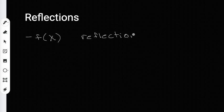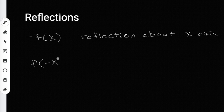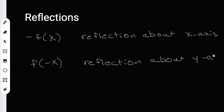Reflections happen when you multiply by a negative number. If you have a negative on the outside — negative f of x — that's a reflection about the x-axis. But if the negative is on the inside of the parentheses, like f of negative x, then it's a reflection about the y-axis. Where the negative is determines which axis you're reflecting over.